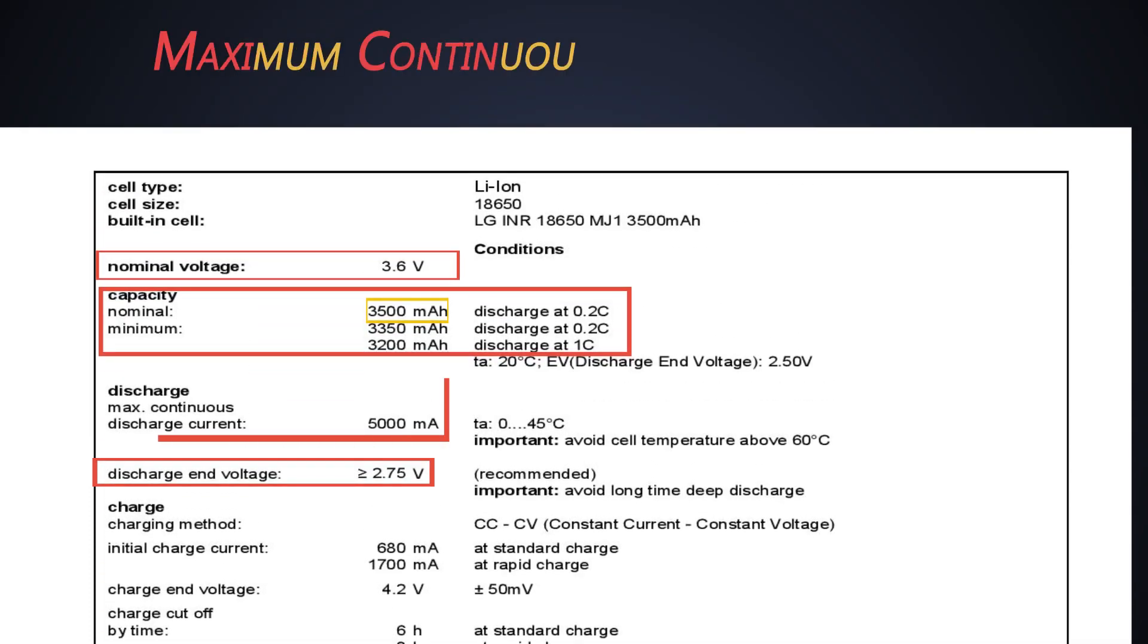Next comes the maximum continuous discharge current. It is the maximum current at which the battery can be discharged continuously. This limit is defined by the battery manufacturer in order to prevent excessive discharge rates which might damage the battery or reduce its capacity. Many times it is given in the terms of C-rate of the battery.